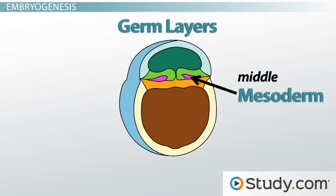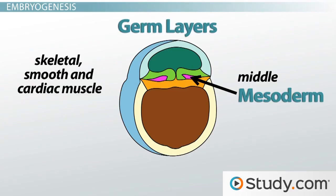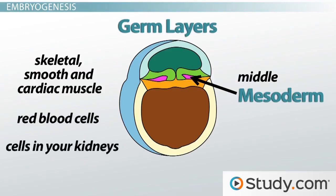The middle mesoderm cells form many of the structures that lie in between your outer skin and your inner body cavities. These mostly include your muscle cells, such as skeletal, smooth, and cardiac muscle. But it also includes other cells, like the red blood cells that run through your arteries and veins, and the cells in your kidneys.